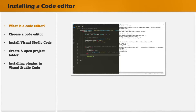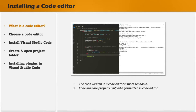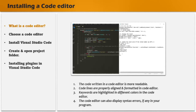Here in this image, you can see that on the left hand side I have written code in a code editor — Visual Studio Code — and on the right hand side you can see the same code written in Notepad, which is a text editor. The program written in the code editor is more readable than the one written in the text editor. Code lines are properly aligned, keywords are highlighted in different colors implying they are reserved keywords, and the code editor will also display syntax errors if any in your program.